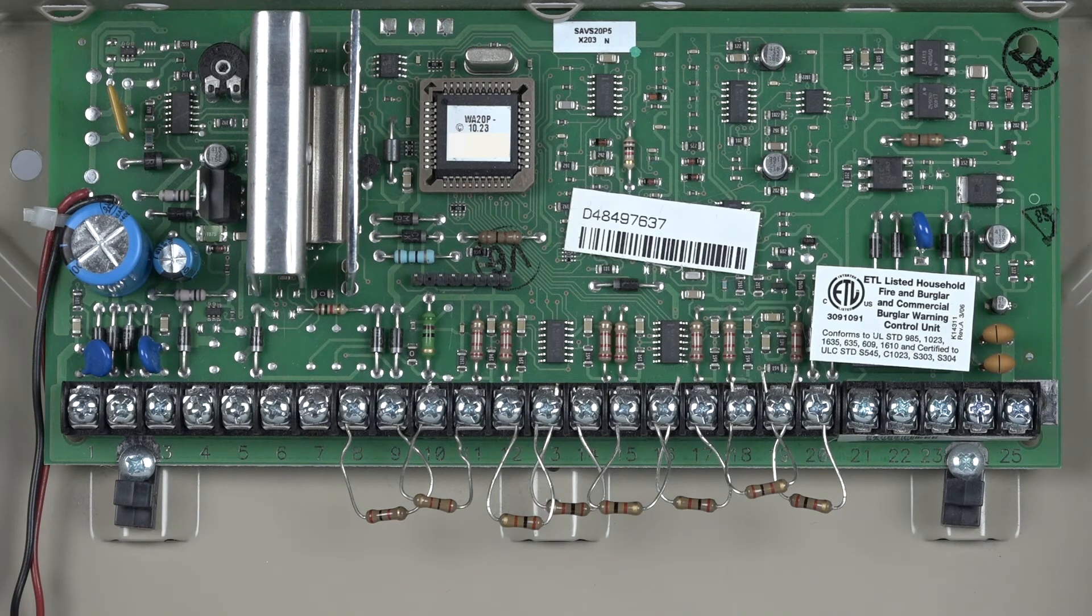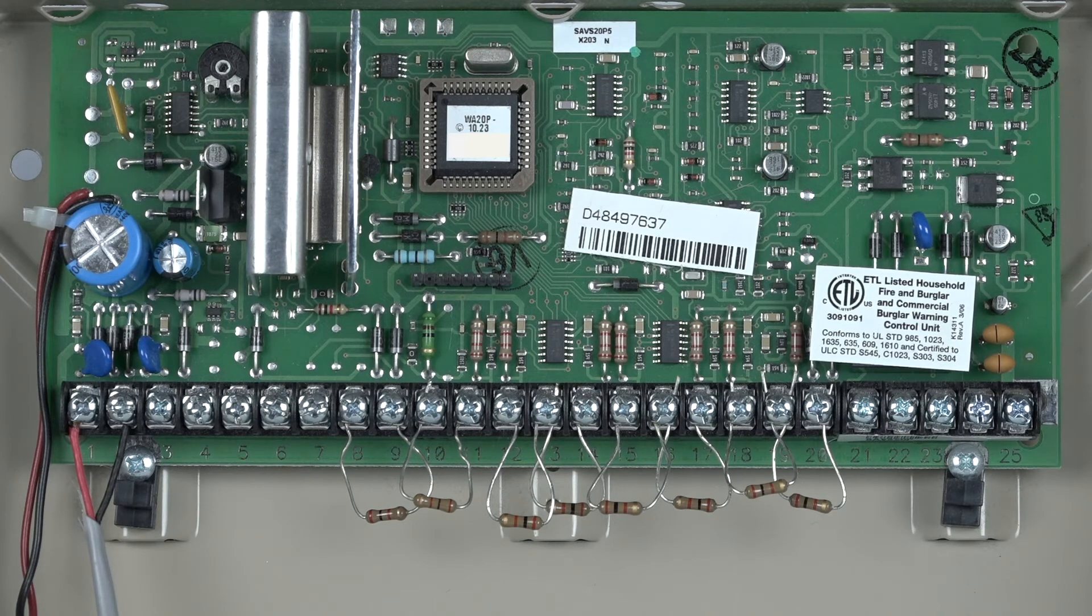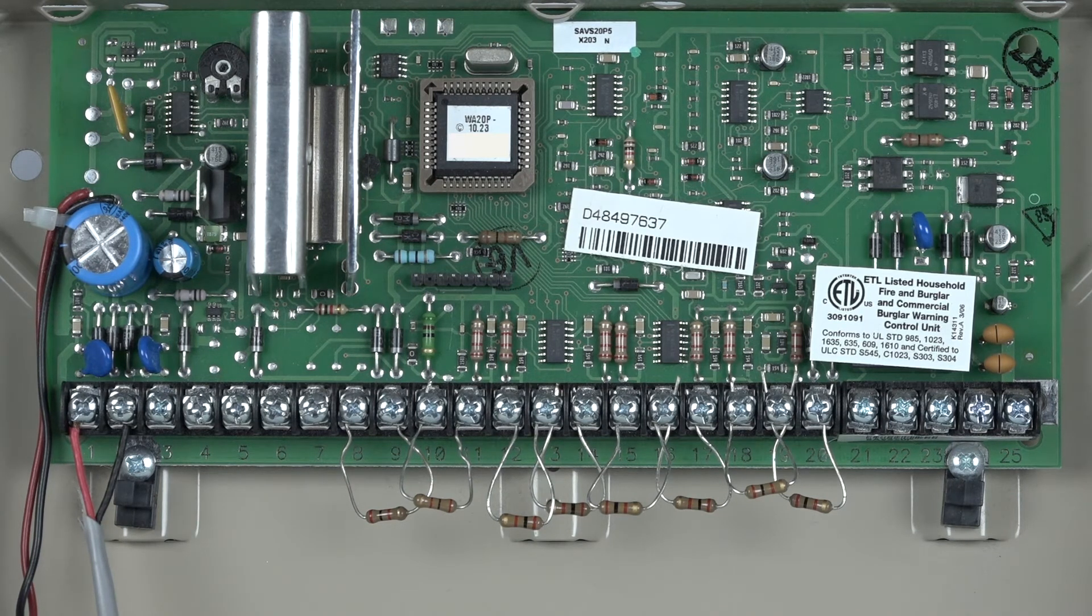After you have mounted the panel in the can, you can begin connecting your wires. With the transformer disconnected from power, connect its wires to terminals 1 and 2. AC power is not polarity sensitive.